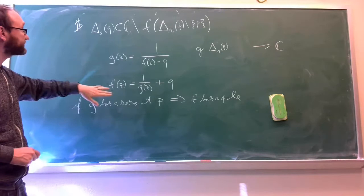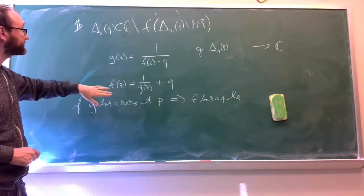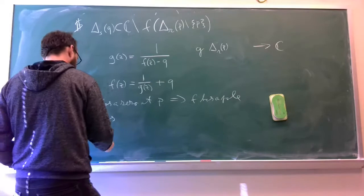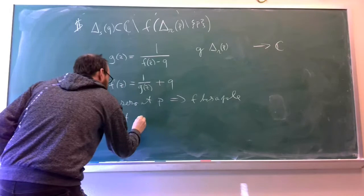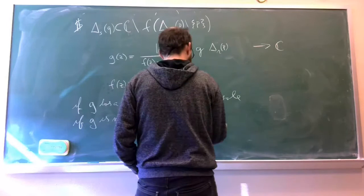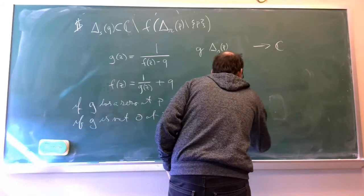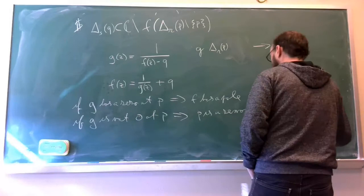So if g has a zero, this is a pole. q is a constant. So f then has a pole at p, not an essential singularity. If g is not zero at p, then p is a removable singularity of f.